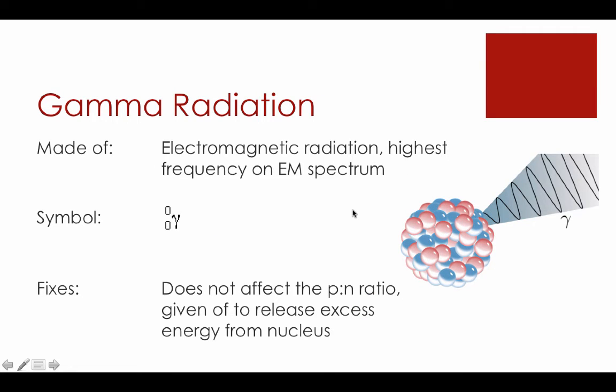Next, we'll talk about another type of radiation a little different than the previous two. This is gamma radiation. Gamma radiation, the most important thing to note about it is that it is electromagnetic radiation. It is not a particle. It is a wave of energy. Electromagnetic radiation, gamma radiation in particular, is the highest frequency on the EM spectrum. It's a very dangerous form of radiation. The symbol we use to represent a gamma particle is the Greek letter gamma, which is this little Y-like character. And because it's energy and not a particle, it has a mass of zero and an atomic number of zero.